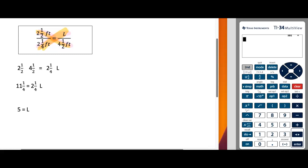In the first part we've got 2 and a half times 4 and a half. In the second part we have 2 and a fourth times L. That's in the yellow. And we want to solve this equation.